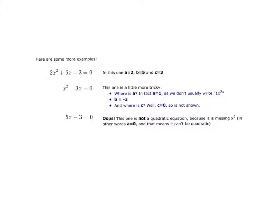This third example is a little on the goofy side — it's just linear. This one's not quadratic because it's missing the x squared altogether. So those are just some examples.